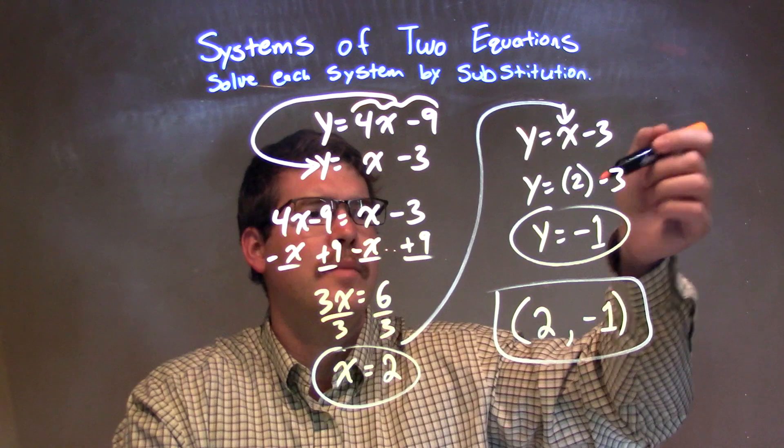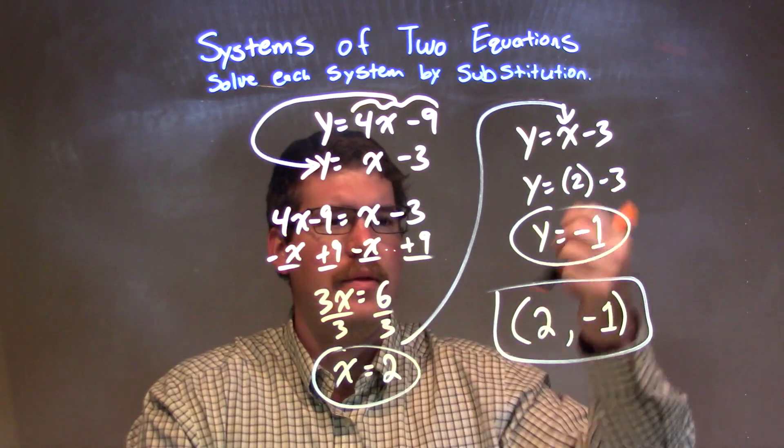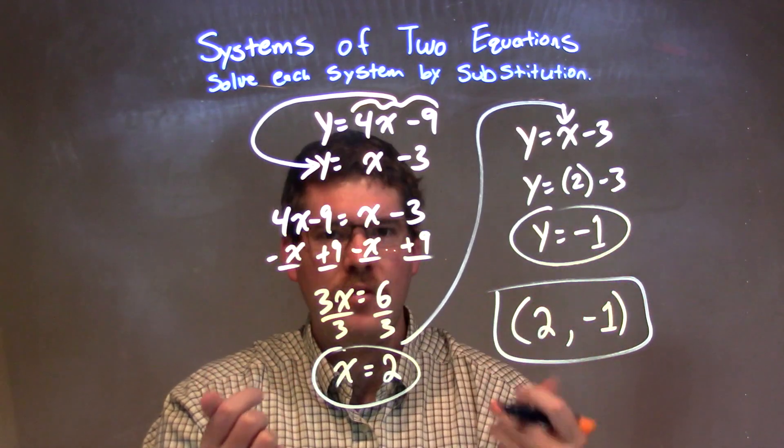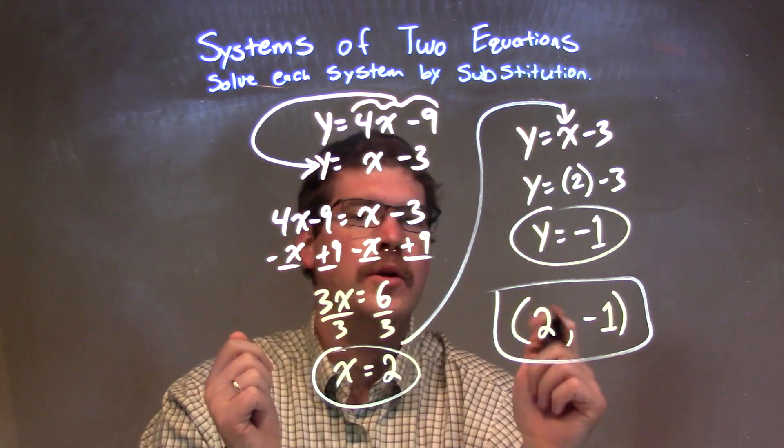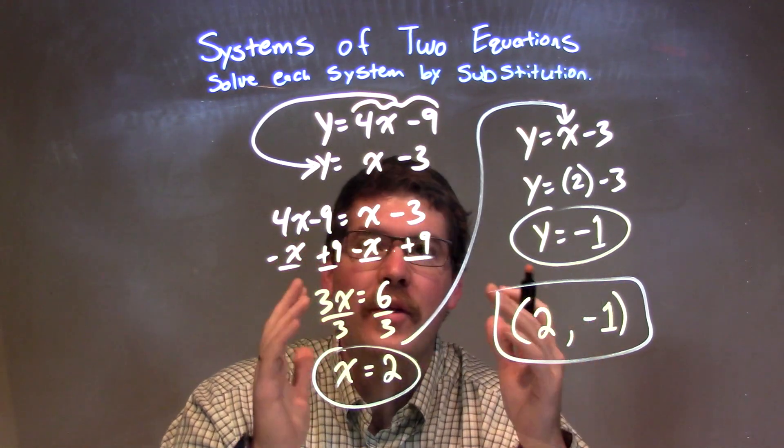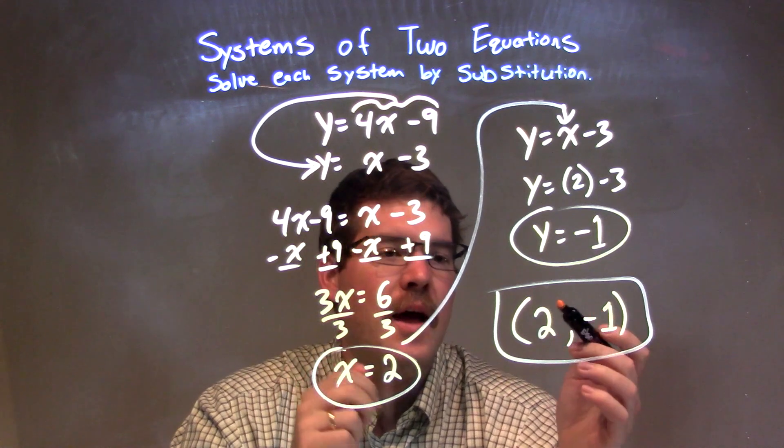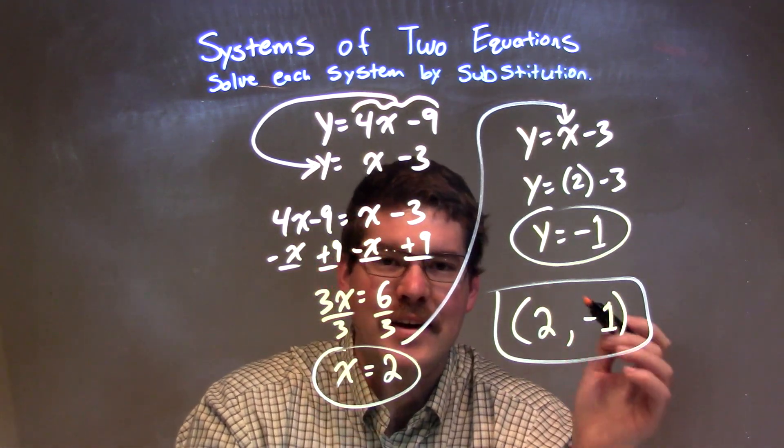And y equals 2 minus 3. 2 minus 3 is negative 1, and that's my y value. Now, I have my x and y value individually, I can write that as a coordinate point, because this is a point where there's a solution for both equations, and that point is 2 comma negative 1.